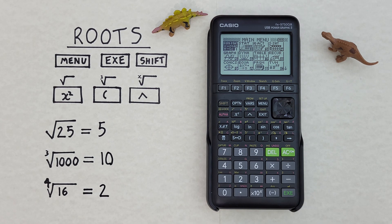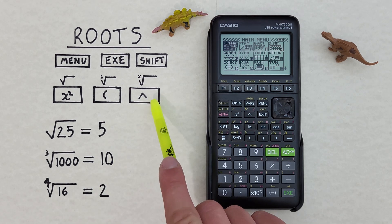And the up arrow or caret key with the shift function of x root that looks like this, located here.